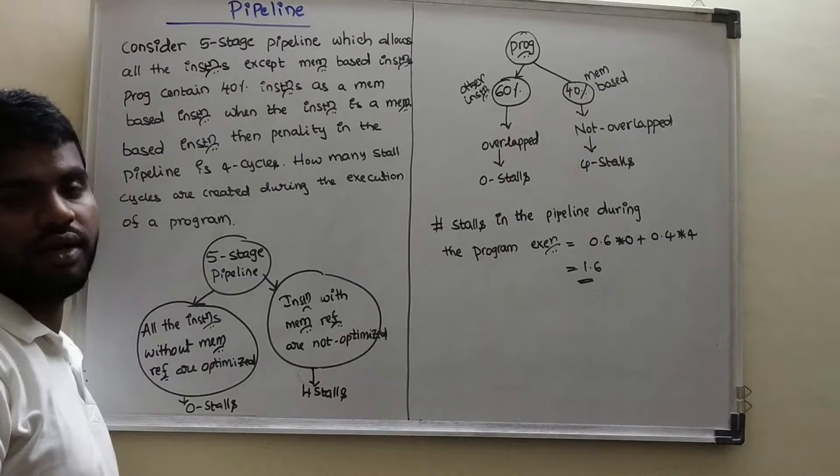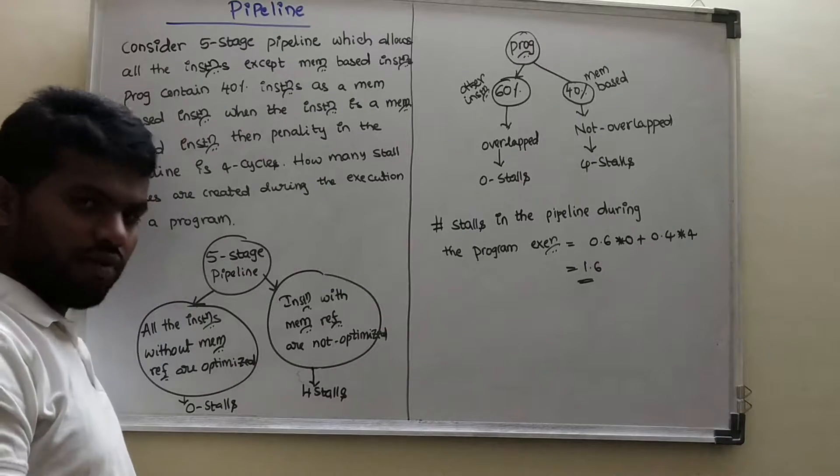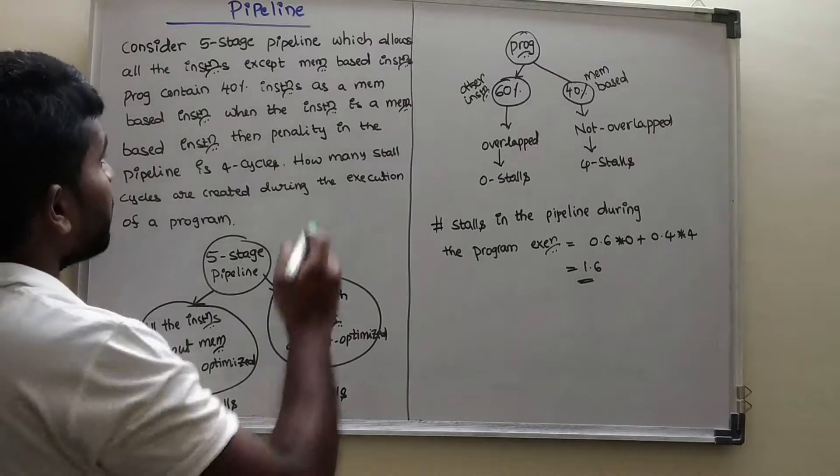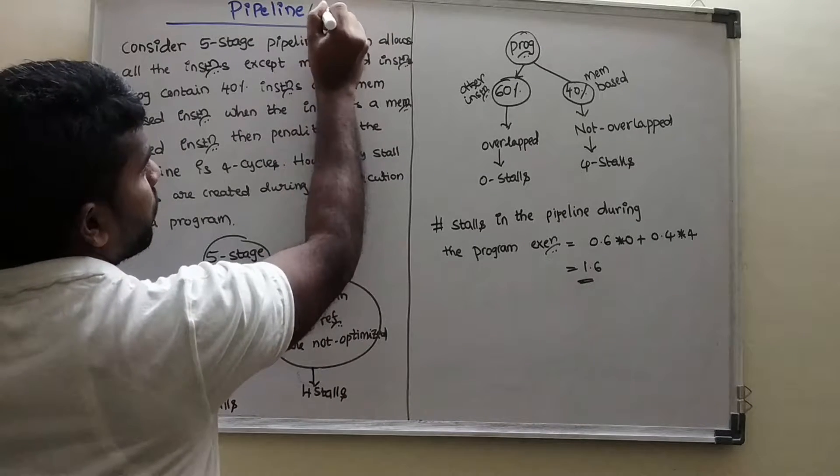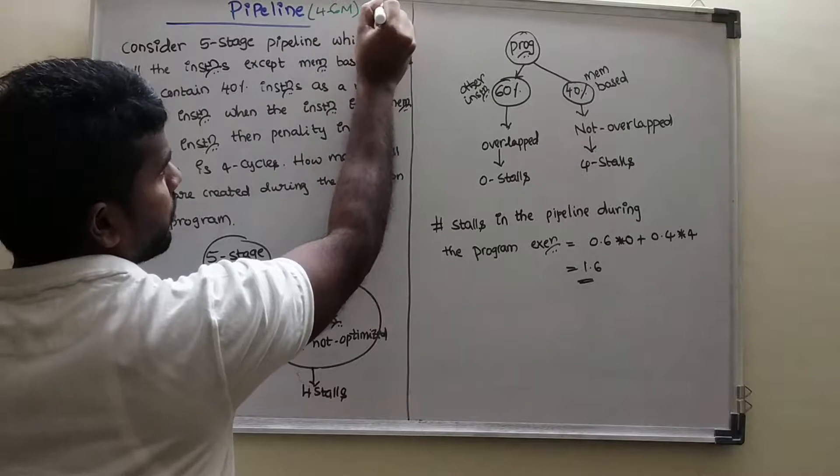Already we discussed about one of the examples which were asked in one of the GATE exams. Pipeline always gives you 4 to 6 marks in GATE, so you have to remember that.